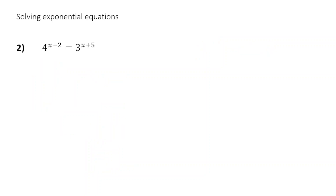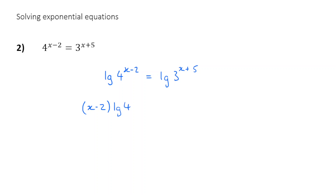Let's go to the next question, question 2. Now this looks a lot more complicated, because we've got powers on both sides — it's not just power of x, it's power of x minus 2 — and we've got different bases: 4 and 3. But we're just going to apply the same idea. I'm going to log both sides. Log base 10 — I'm going to write that as lg for simplicity. So lg of 4 to the power of x minus 2 is equal to lg of 3 to the power of x plus 5. And then what I can do is apply the third law of logarithms again — I'm going to bring the powers down.